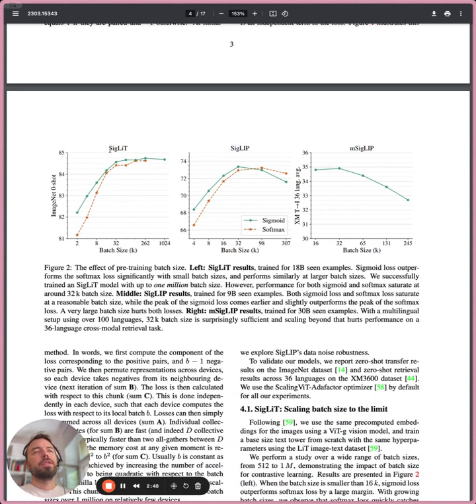So here, they use this loss function both in the LiT setup and LiB setup. LiB is training both the image and text encoder from scratch, and LiT is keeping the image encoder frozen and only training the text encoder. In both of these cases, sigmoid loss works well.